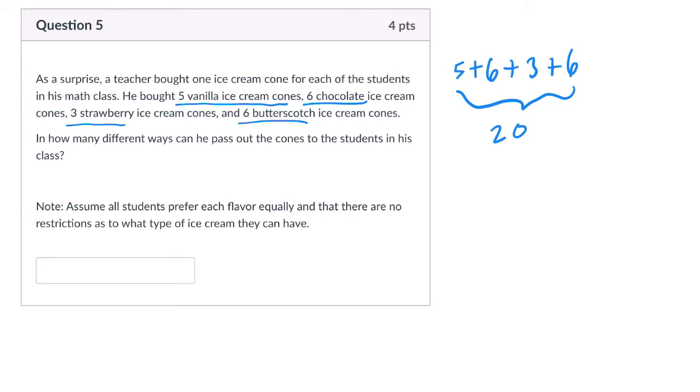Now, if you have 20 distinct different things, there will be 20 factorial ways of arranging them. But there are lots of repeats here. You know, if you have, say, a vanilla cone and a vanilla cone, for example, let's do three vanilla cones.